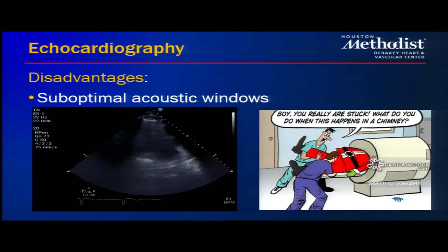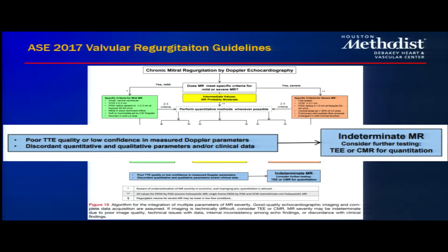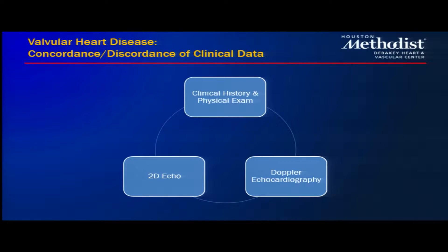So where does CMR actually contribute in valvular heart disease assessment? From the 2017 valvular regurgitation guidelines by Dr. Zoghbi et al., we can see clear cases where mitral regurgitation may be mild versus severe based on vena contracta, PISA, and regurgitant volume calculations. However, there is a large gray area where data may be discordant — and that's where TEE and CMR may play a role, offering additional information alongside the clinical history, physical exam, 2D echo, and Doppler parameters.